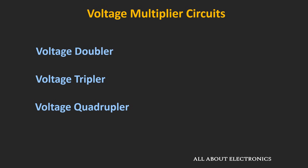As its name suggests, in case of a voltage doubler circuit, if we apply an AC input signal with a peak amplitude of Vm, the output will be equal to two times Vm. Similarly, in case of a voltage tripler circuit, the output will be equal to three times Vm, and in the voltage quadrupler circuit, the output will be equal to four times Vm.